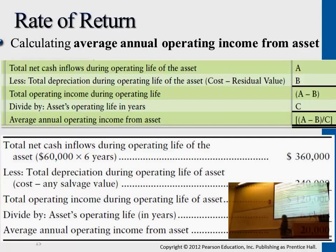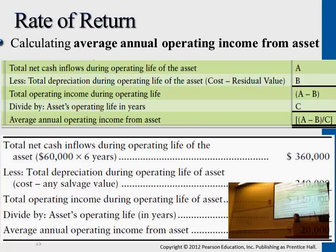Second, since we're comparing operating incomes — this is only net cash inflow — we're considering the downgrade of the asset. That depreciated value is $240,000. Meaning after we use the asset for six years, it's worth nothing. So we reduce the $360,000 by $240,000 to figure out the operating income: $120,000. That's the total operating income for six years. Divide by six and the average annual income is $20,000.